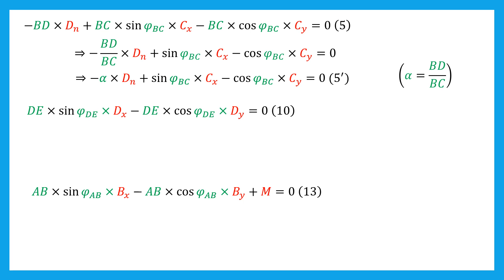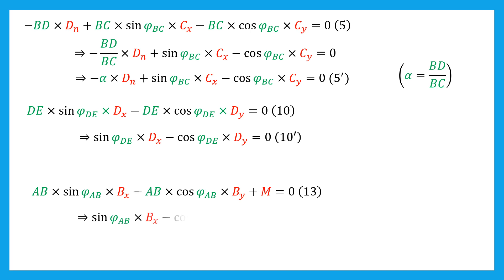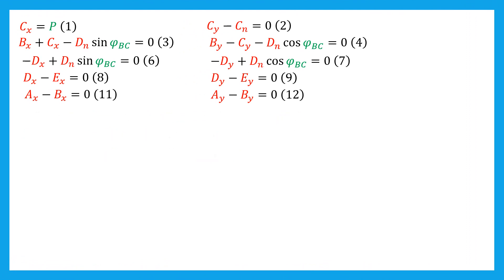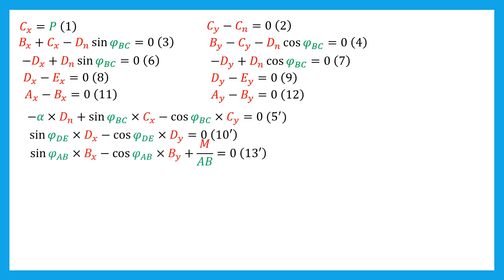Moving to equation 10, this equation can be simplified by dividing by the distance DE. Equation 10' then writes: sin(phi_DE)·DX minus cos(phi_DE)·DY equals zero. Next, considering equation 13, the equation can be simplified by dividing by the distance AB. Equation 13' then writes: sin(phi_AB)·BX minus cos(phi_AB)·BY plus M/AB equals zero. We substitute equations 5, 10, 13 by equations 5', 10', 13'.